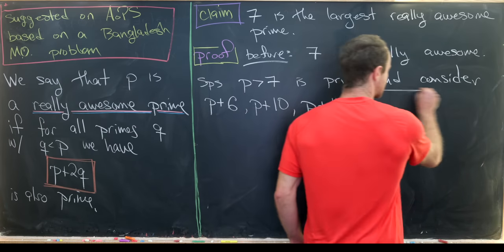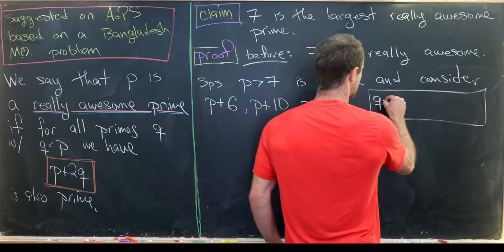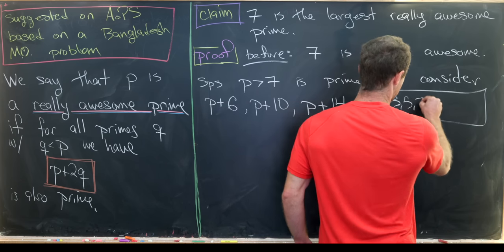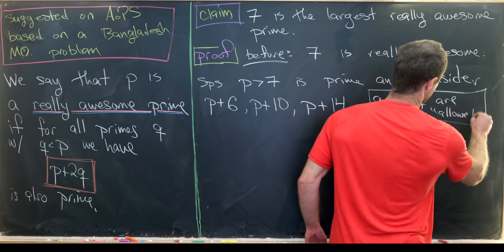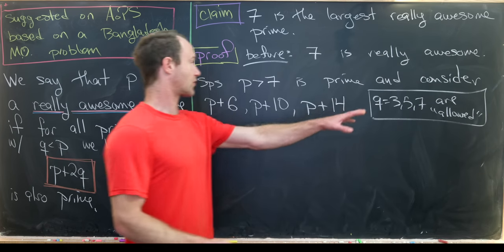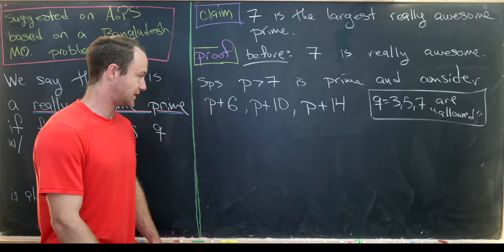We're able to do that because q equals 3, 5, and 7 are allowed here. That's because those are primes which are smaller than p.